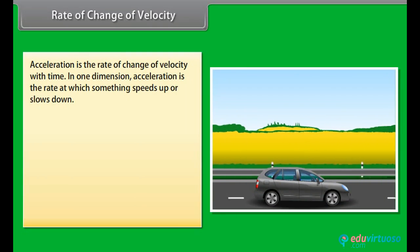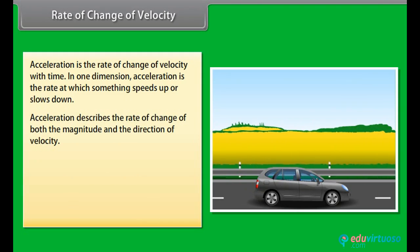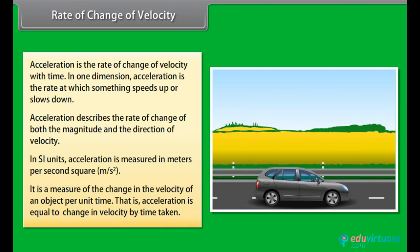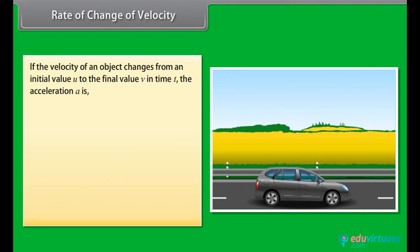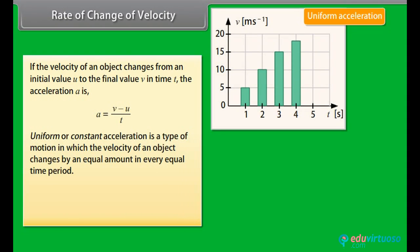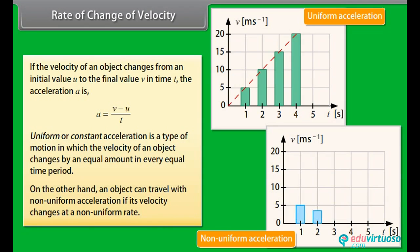Rate of change of velocity. Acceleration is the rate of change of velocity with time. In one dimension, acceleration is the rate at which something speeds up or slows down. Acceleration describes the rate of change of both the magnitude and direction of velocity. In SI units, acceleration is measured in meters per second squared. Acceleration = change in velocity / time taken. If the velocity of an object changes from initial value U to final value V in time T, then acceleration A = (V - U) / T. Uniform or constant acceleration means the velocity changes by an equal amount in every equal time period. An object can travel with non-uniform acceleration if its velocity changes at a non-uniform rate.